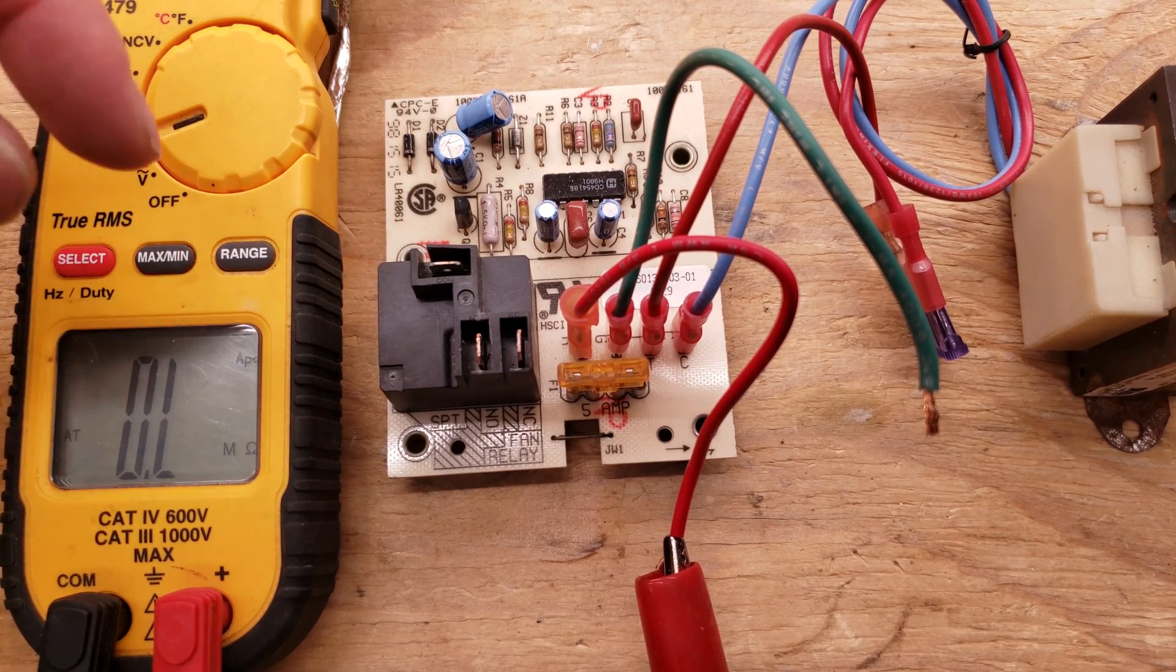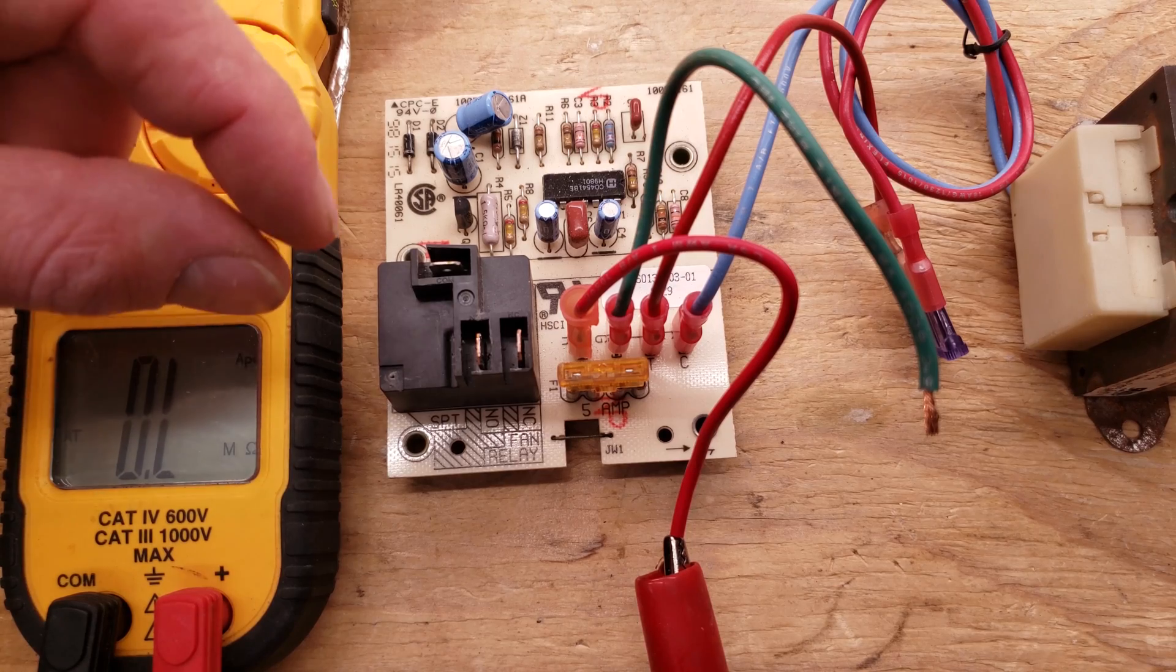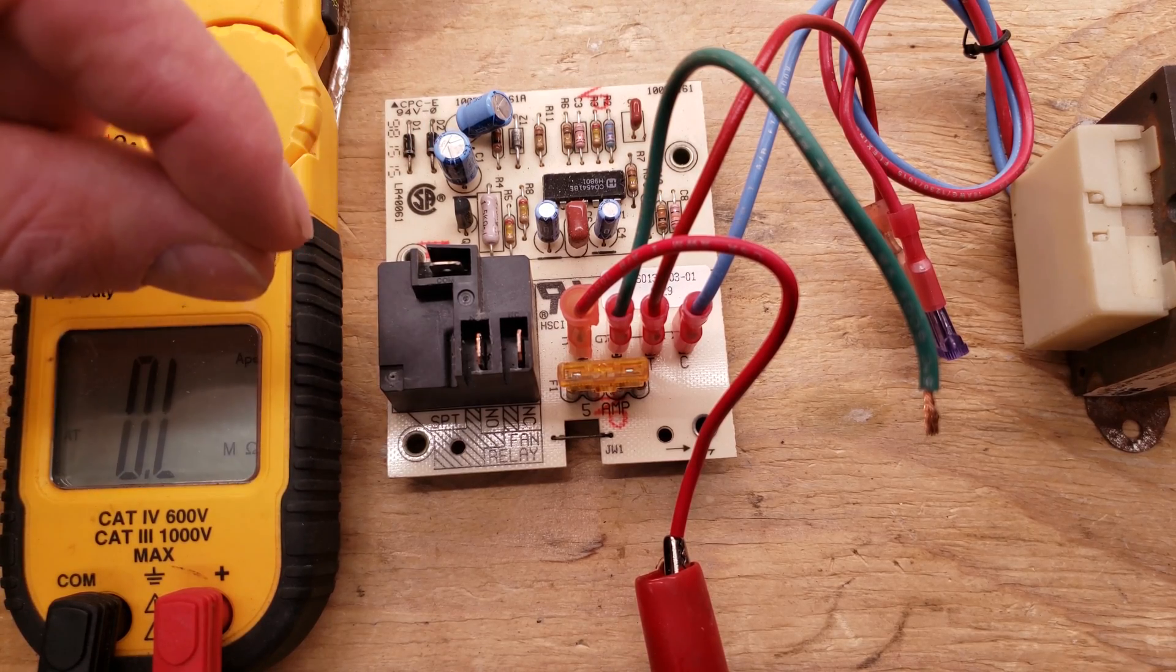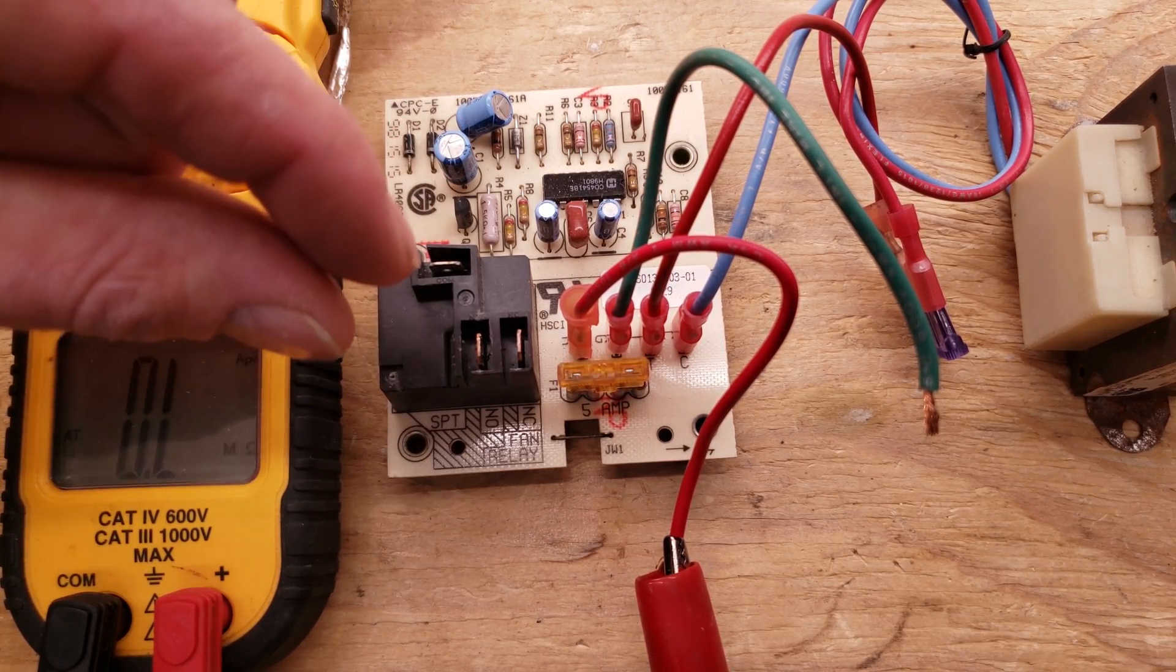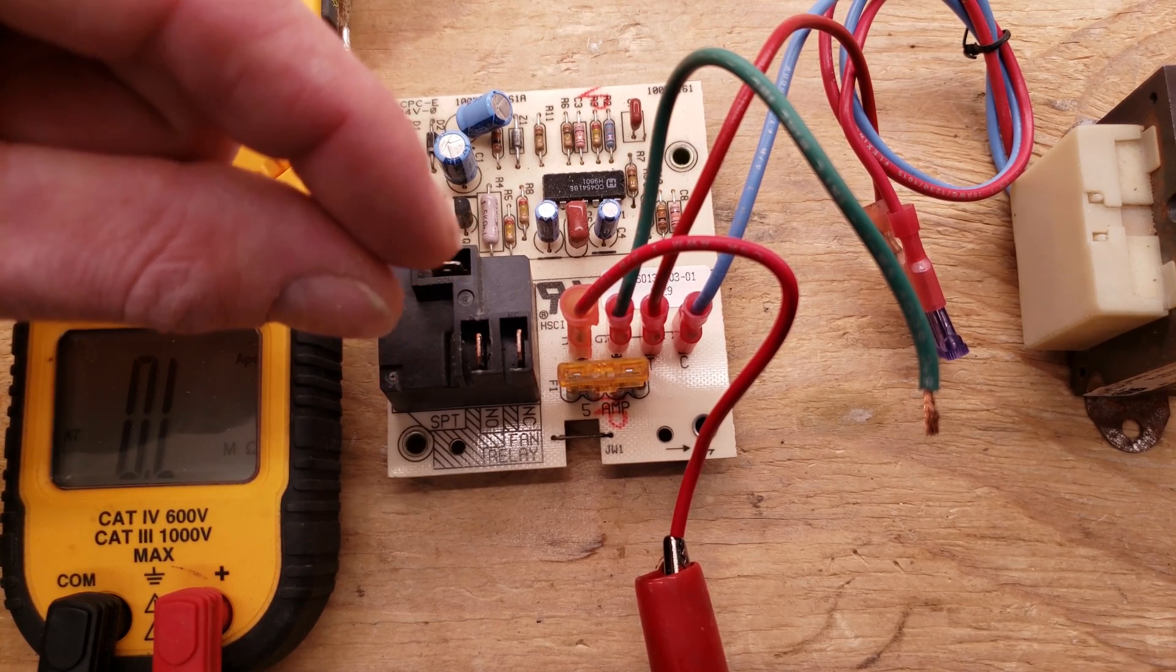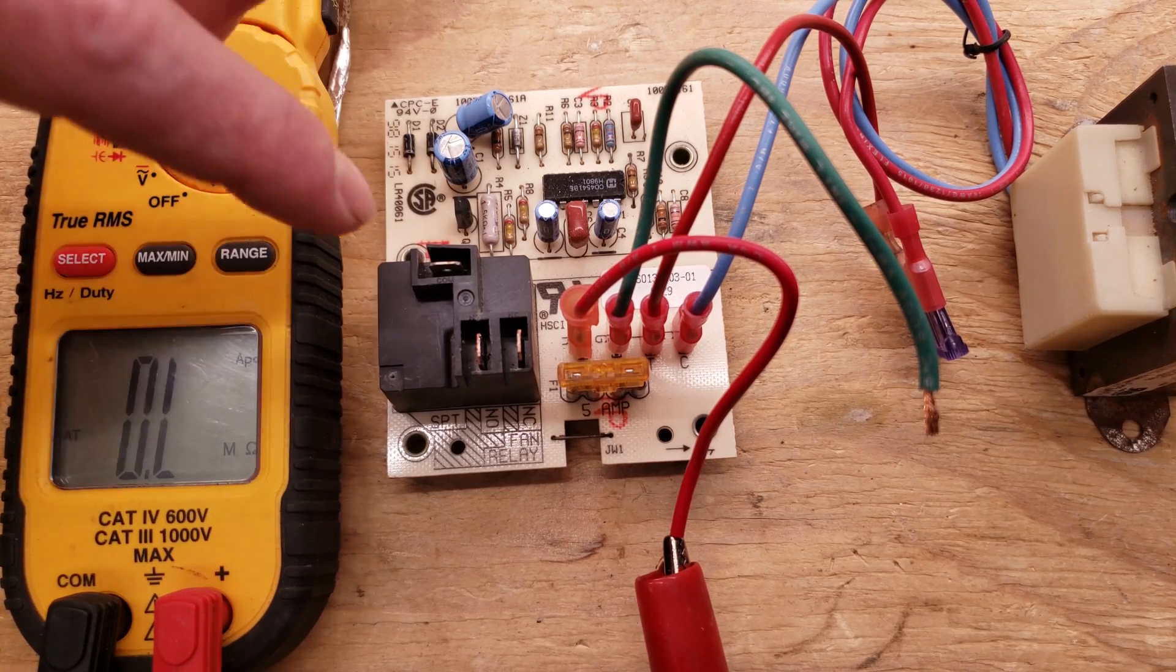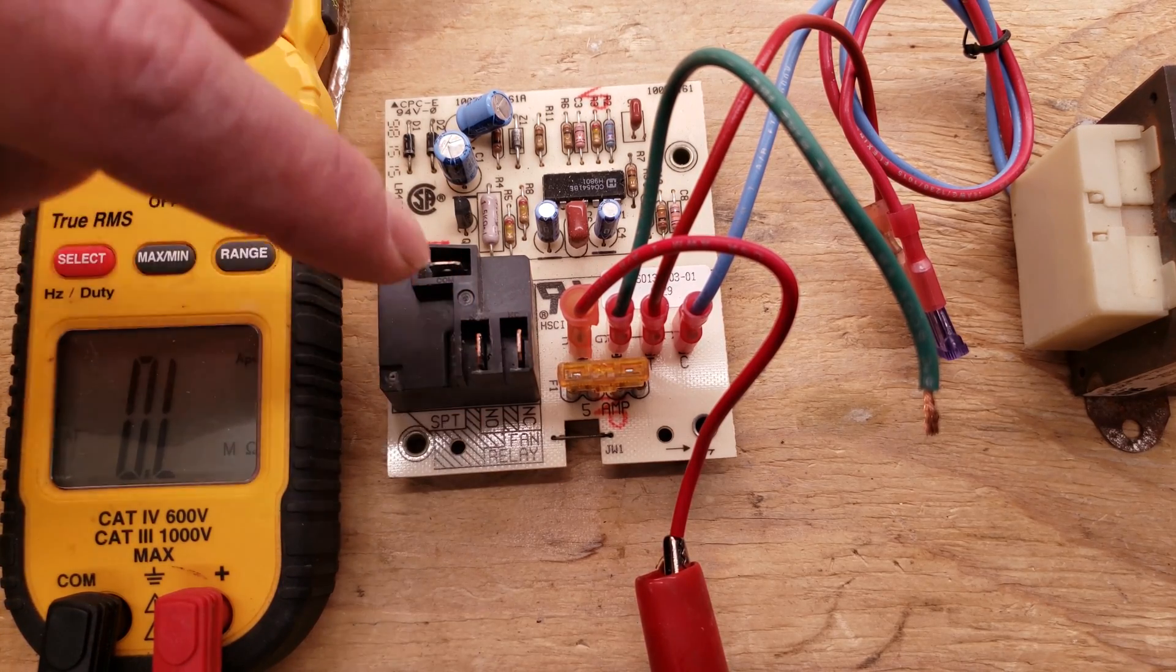If you're not, then what could happen is maybe the contacts got welded together and they're supposed to be open but they're stuck together. Or when they're supposed to be closed, there could be a high resistance value between them, maybe because the contacts are pitted and burnt. So you're just going to go ahead and measure your resistance values across this relay right here.